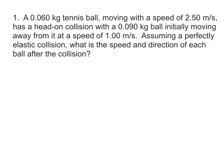First example — this is in your packet under 'elastic collisions examples.' A 0.060 kg tennis ball moving at 2.50 m/s has a head-on collision with a 0.090 kg ball initially moving away from it at 1 m/s. Assuming a perfectly elastic collision, what is the speed and direction of each ball after the collision? Draw both balls: the tennis ball (object 1) moving to the right, and the other ball also moving to the right but away from it — this is state A. After the collision, they bounce off each other.